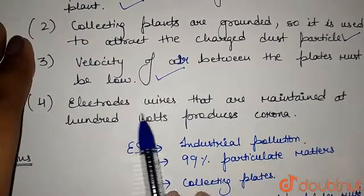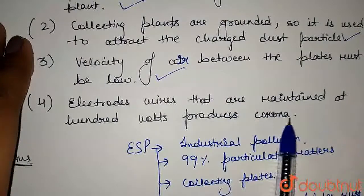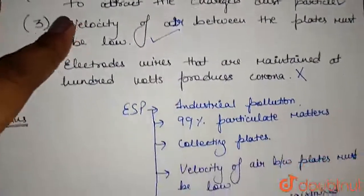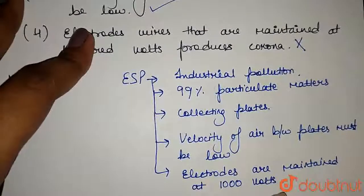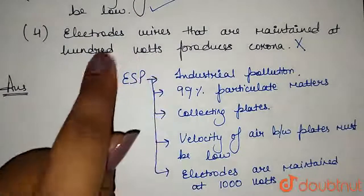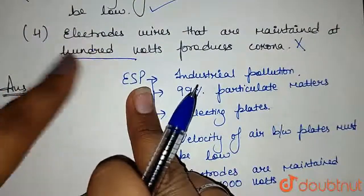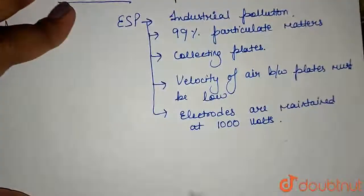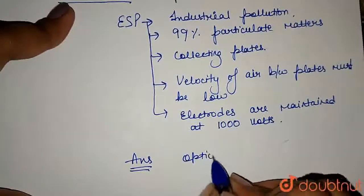Option D states that the electrode wires are maintained at 100 volts and produce corona — this is incorrect. As explained, in an electrostatic precipitator, electrodes are generally maintained at several thousand volts. Option D states only 100 volts, so this is wrong. Therefore, option 4 (Option D) is the incorrect statement, and the answer to this question is option 4.